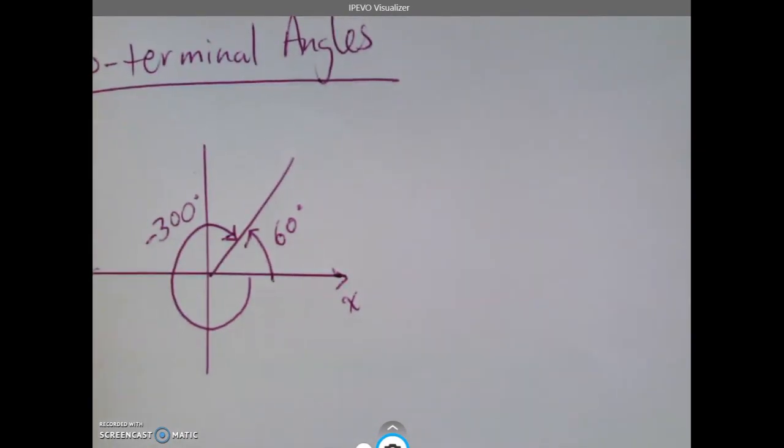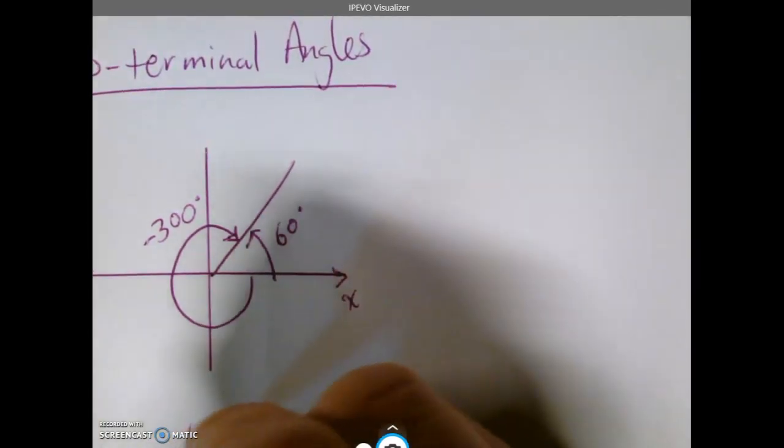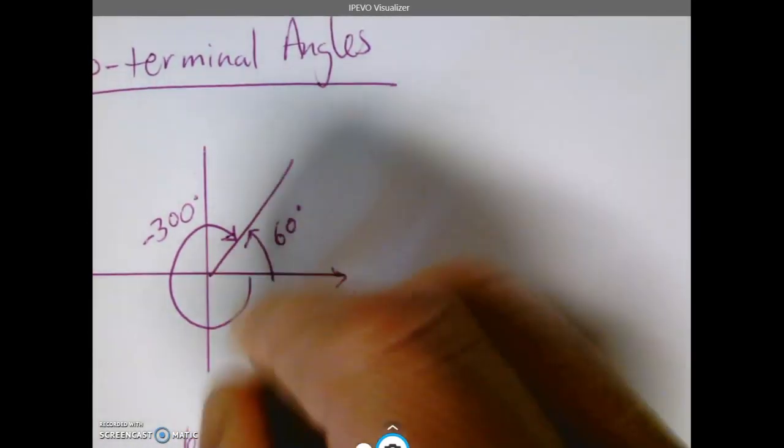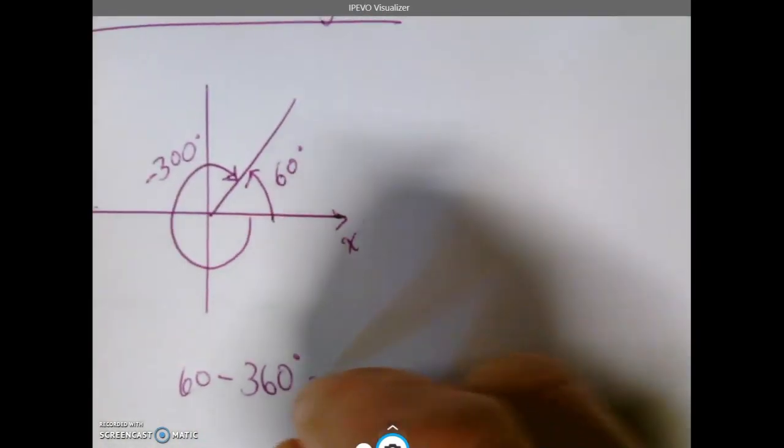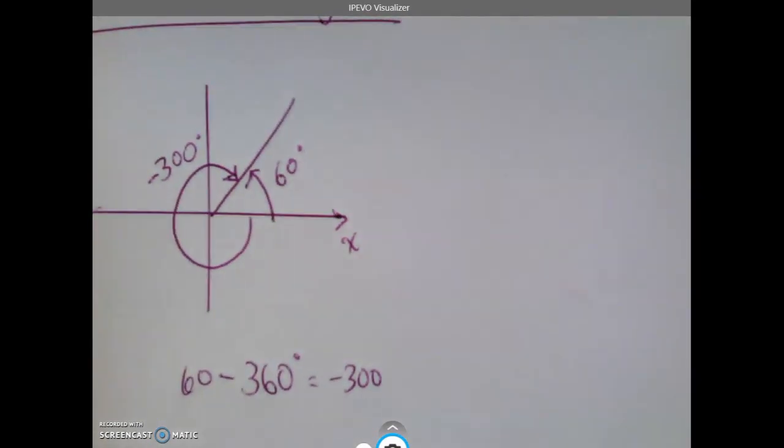See if that makes sense. Because what I did is I went 60, and then I went backwards and subtracted 360, and that gave us negative 300. Because together, both parts have to make up a total circle of 360 degrees. Let's try that one more time.